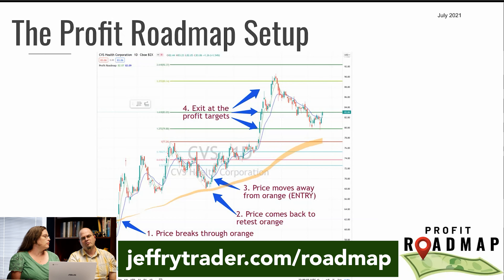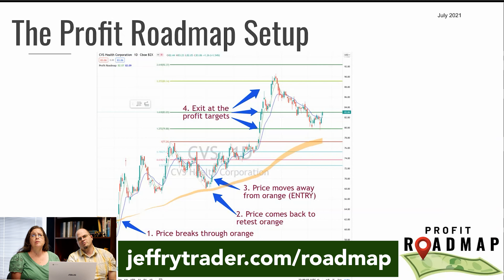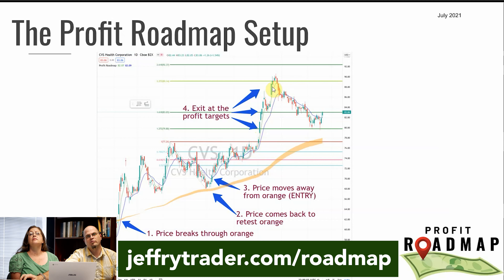Find the ones that break up through, then come back. Some of them sit on the roadmap line for a little while, while some of them — like CVS — went up, came down, bounced, and took off. That one was down there for like four or five days and then started taking off. Point number three is the entry — that's where it starts breaking higher. Then point four is when you get to your profit targets, and there's a little resistance at that prior high before you came down to point two.